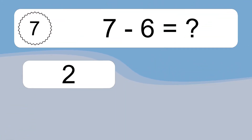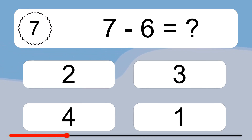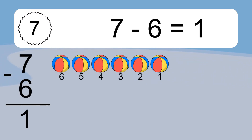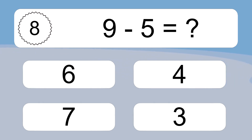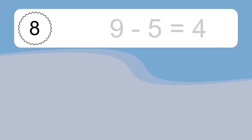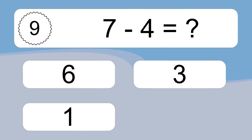7 minus 6 equals what? 7 minus 6 equals 1. Let's count it. 6, 5, 4, 3, 2, 1. 9 minus 5 equals what? 9 minus 5 equals 4. Let's count it. 8, 7, 6, 5, 4.